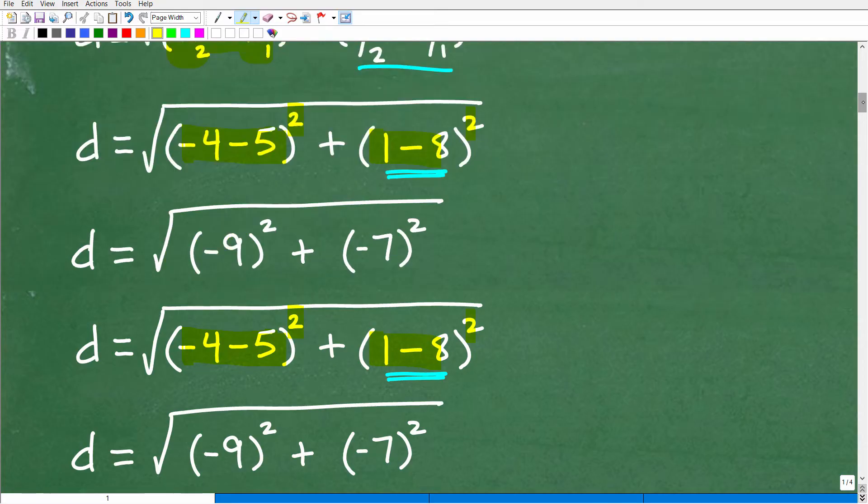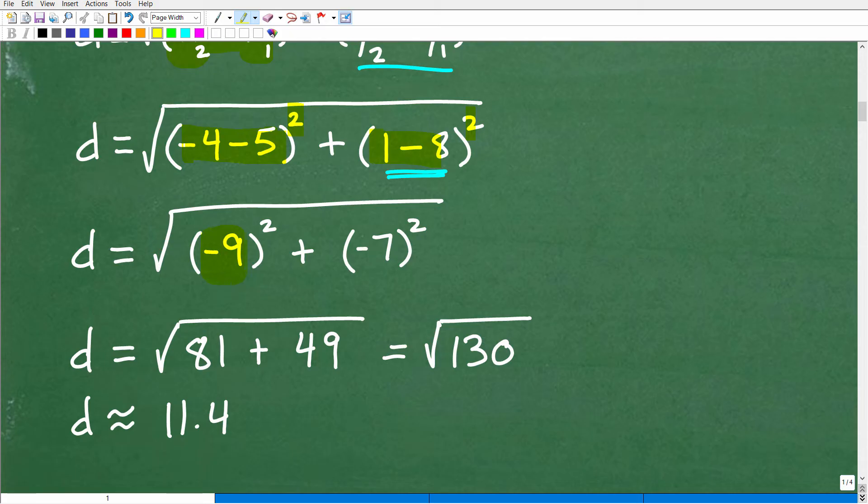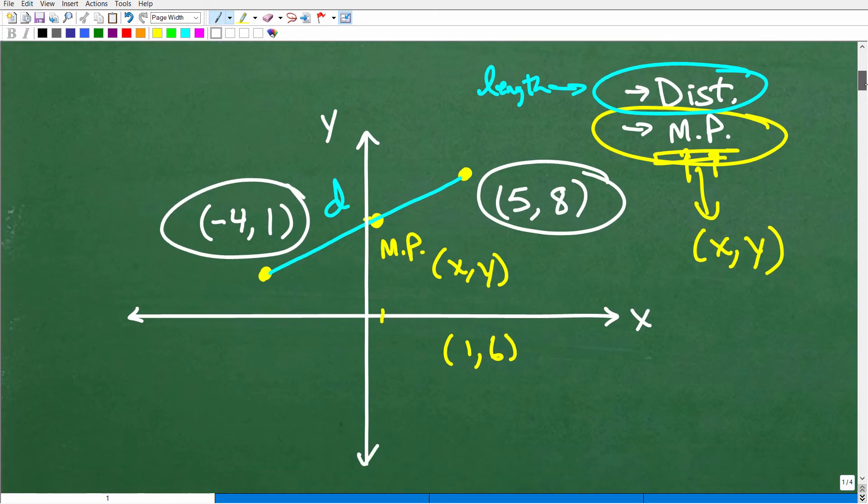So negative 4 minus 5 is negative 9. We're going to square that. And then 1 minus 8 is negative 7. And we're going to square that. So negative 9 squared is negative 9 times negative 9. That's a positive 81. Negative 7 squared is negative 7 times negative 7. Of course, that's a positive 49. So 81 plus 49 is 130. Then finally, after you have all this internal stuff done, we're going to take the square root of 130. And that's approximately 11.4. That's our answer. So our distance is approximately 11.4, meaning if we were going to come up here, we would have the distance between this coordinate and this coordinate would be around 11.4 units.